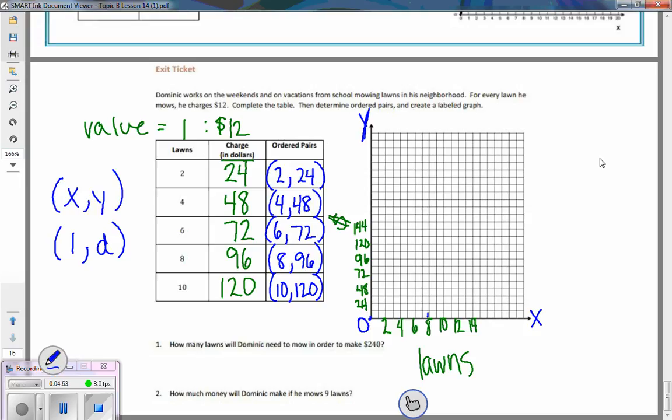A lot of people when they graph, they want to say 'oh eight lawns and ninety six dollars,' and I see this often. They start at the eight and then they go up till they find 96 and over like this, and they think that that's graphing. But remember this is an ordered pair, so this is not graphing, that's making a little square or rectangle in your chart.